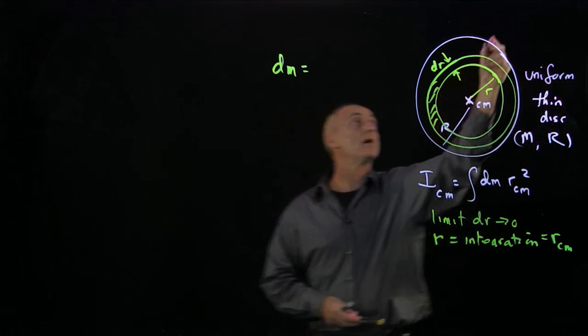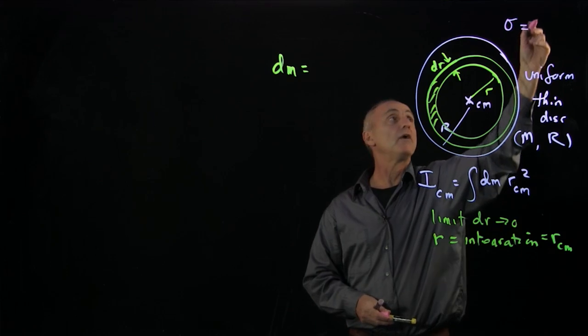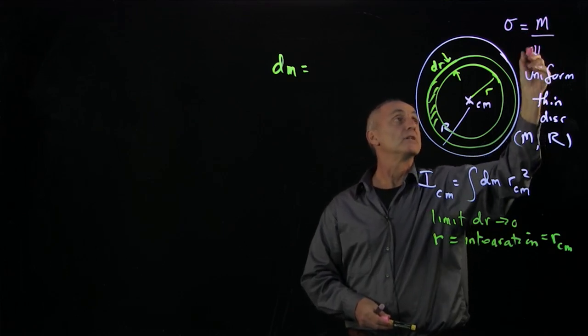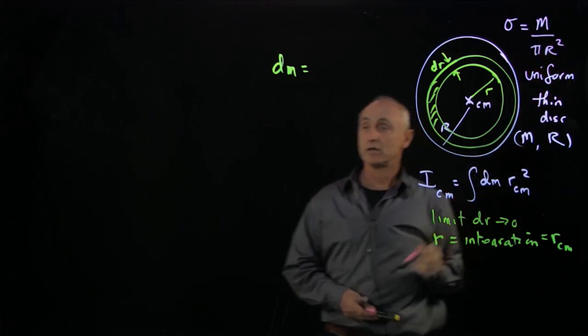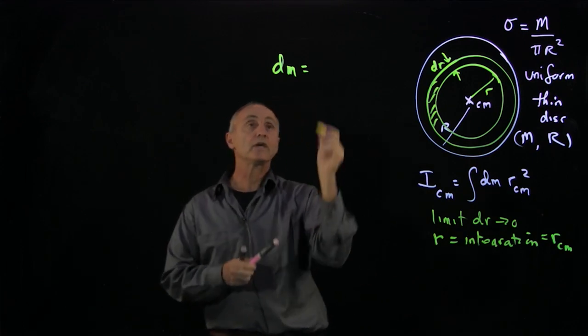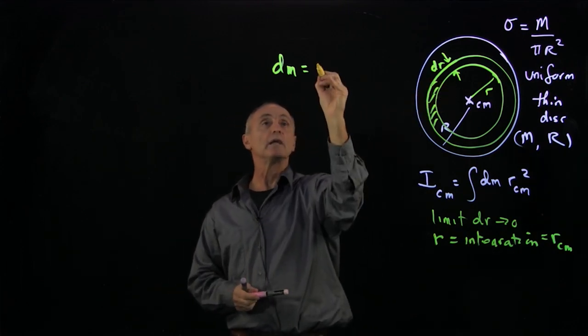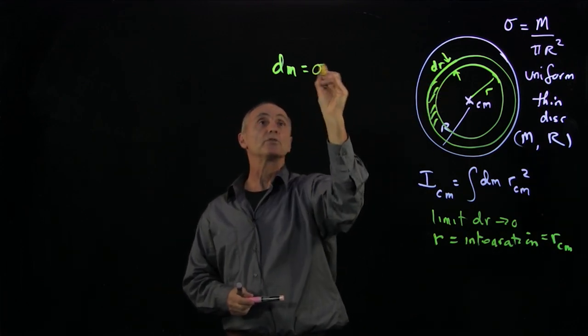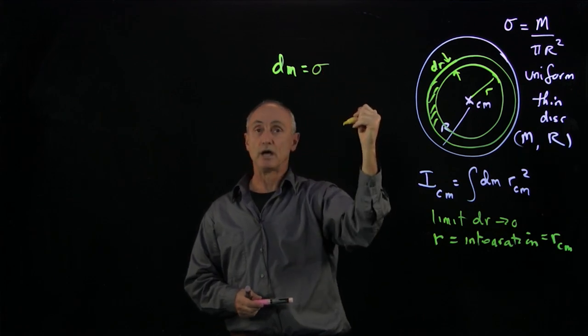And so we can describe the mass per unit area as the total mass divided by the area of the whole disk. And then we can say that the mass in that ring is equal to sigma, mass per area.